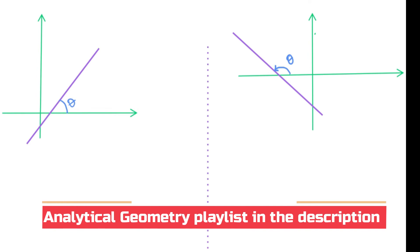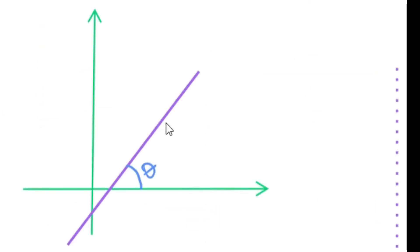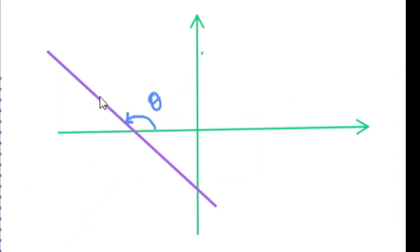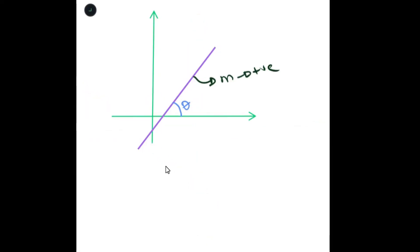Now, there are two types of questions you will get with inclination of the line. Your line could either be positive, like in this case, because as we can see, the gradient of this is positive. Or your line could look like this, which is a negative graph, because your gradient is negative.